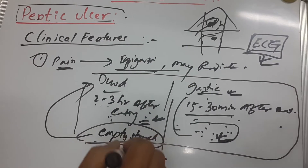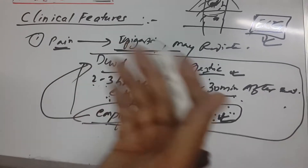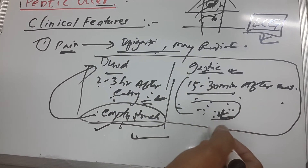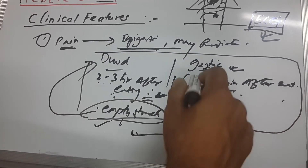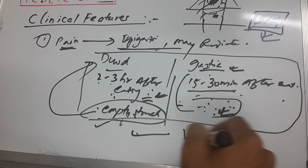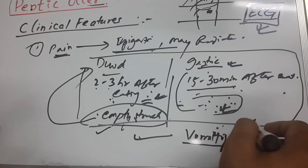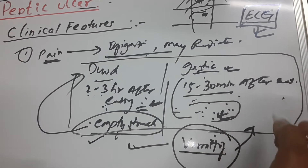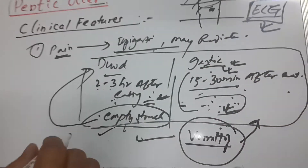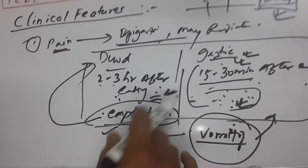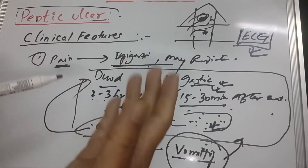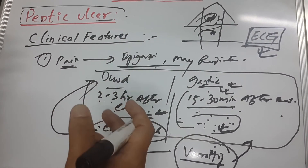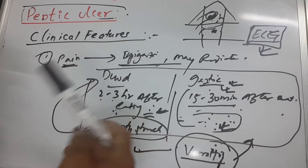Regarding relieving factors: after food, there may be some relief in duodenal ulcer, but not always. Importantly, after vomiting, a patient with gastric ulcer feels relief — that is characteristic of gastric ulcer. Other triggers include smoking, excess coffee, tea, and alcohol, which may also cause pain.